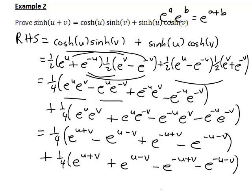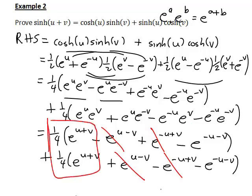Before expanding further, since everything is multiplied by a quarter, there is clearly some cancellation. The first bracket has a negative e to the u minus v and the second has a positive e to the u minus v, so those cancel — a quarter e to the u minus v minus a quarter e to the u minus v. Similarly, the e to the negative u plus v terms cancel as well. This leaves us with a quarter e to the u plus v, plus another quarter e to the u plus v, minus a quarter e to the negative u minus v, minus another quarter e to the negative u minus v.